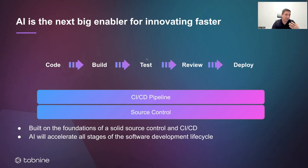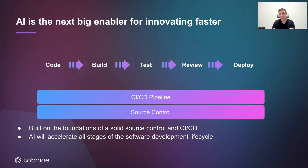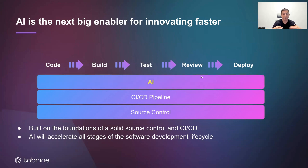You also have test cases that historically ran on various versions of the code and either broke or passed successfully, so you get a lot of rich information from these past executions of tests. You also get past code reviews and what happened with them — what comments were made on what piece of code — and also deployment logs. So you have all this rich information starting with the source control and going to other artifacts. And now it is time to really reap the benefits of having all that information and learn from it in order to accelerate all stages of the software development lifecycle.